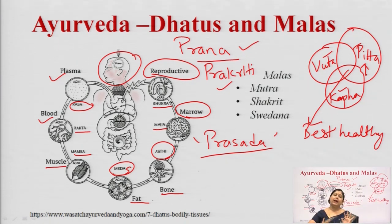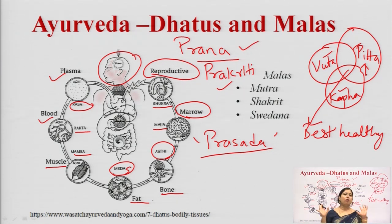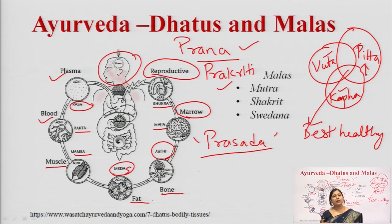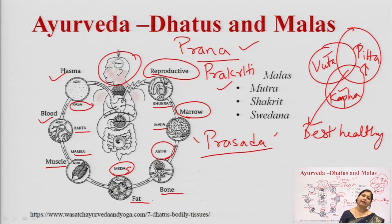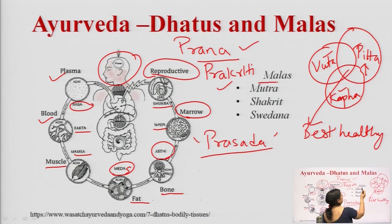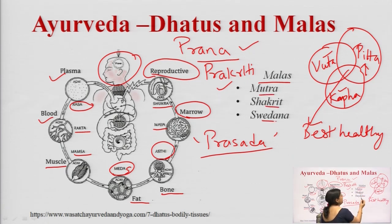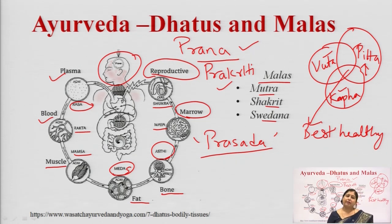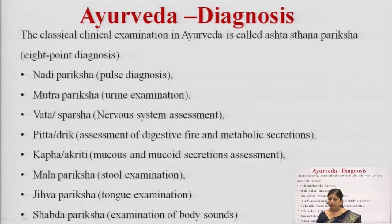Whatever raw material — food — is taken into the body, it also gets excreted. The excreted materials are known as Malas in Ayurveda. They include Mutra (urine), Shakrit (fecal matter), and Swedana (perspiration) — excretion through the urinary route, fecal material, and perspiration.